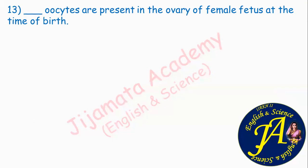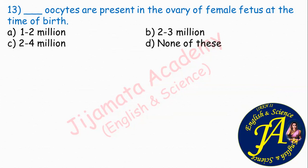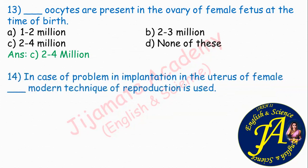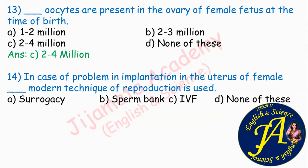Question 14: in case of problems in implantation in the uterus of a female, which modern technique of reproduction is used? Options are surrogacy, sperm banks, IVF in vitro fertilization, none of these. Correct answer is A: surrogacy. A surrogate mother, that is an alternate mother, is used for implantation of the embryo in the uterus.